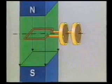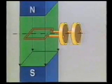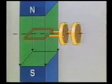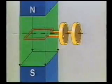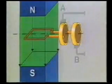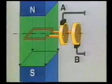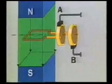A rotatable conductor loop is placed into a constant homogeneous magnetic field. The voltage induced in the loop is taken from carbon brushes A and B and indicated by the voltmeter.